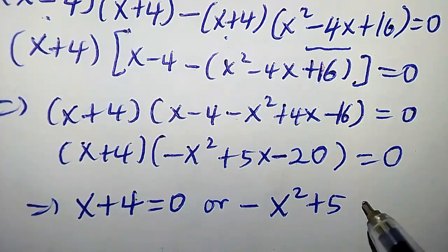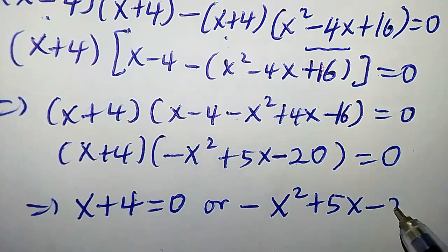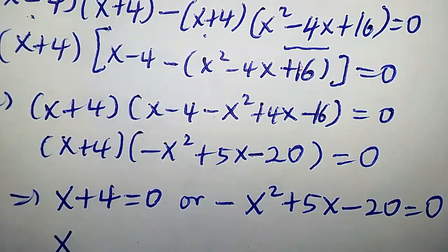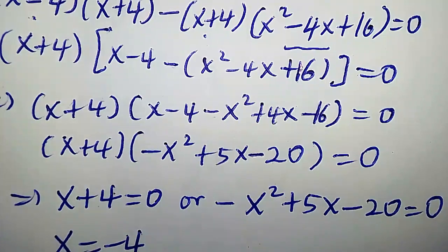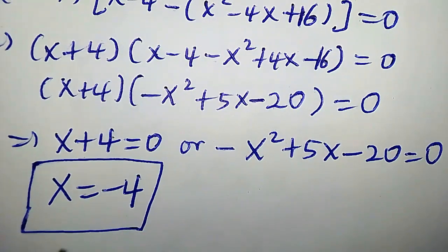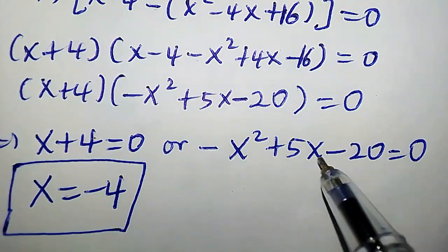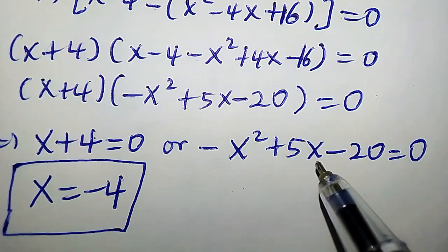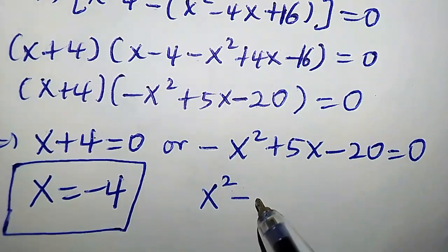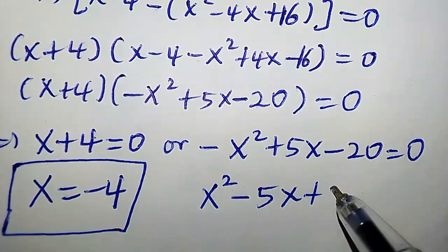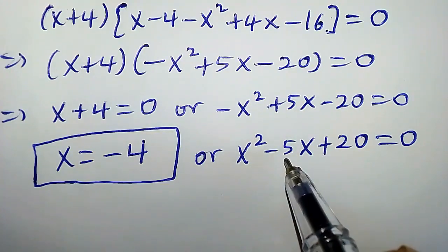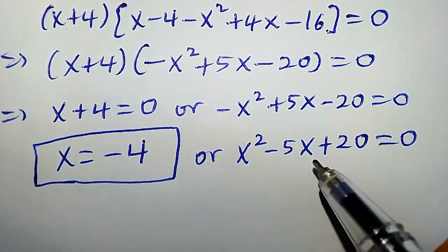So we have x plus 4 times (negative x squared plus 5x minus 20) equals zero. This implies x plus 4 equals zero, or negative x squared plus 5x minus 20 equals zero. Clearly from the first factor, x equals negative 4, which is the first real solution. For the second factor, multiplying both sides by minus 1, we get x squared minus 5x plus 20 equals zero.